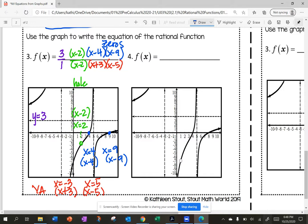So I'm looking at the hole. The hole is x minus one, divided by x minus one. Next, I see my zeros. X minus four. X minus eight.